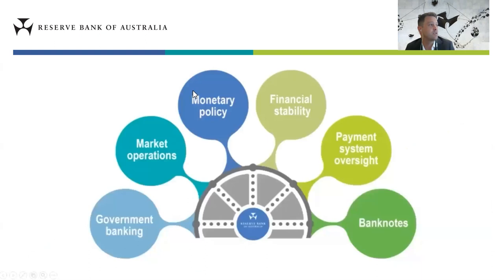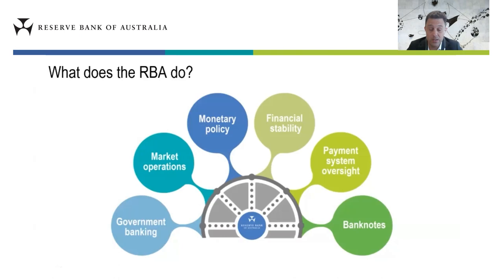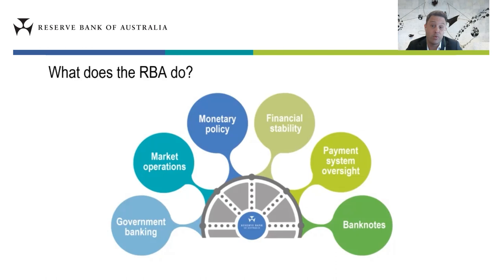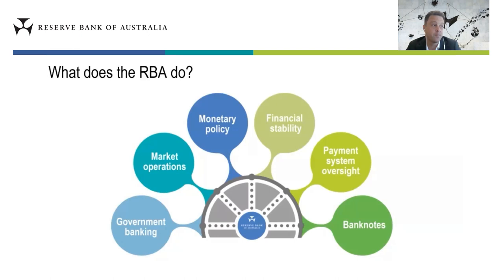On to the presentation. First I want to tell you a little about the functions of the RBA. The RBA is known mainly for its monetary policy decisions, but it does a lot more — we design and print Australia's banknotes, oversee the payment system, and we're the Australian government's banker, processing over 300 million payments on behalf of government agencies each year. The RBA also has a responsibility to maintain the stability of the financial system, with a department constantly scanning Australian and global financial systems for emerging risks.